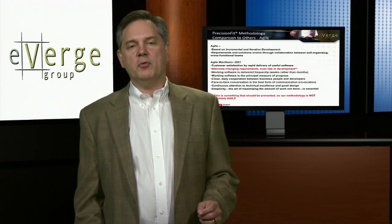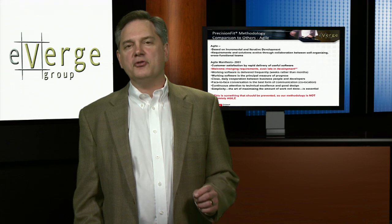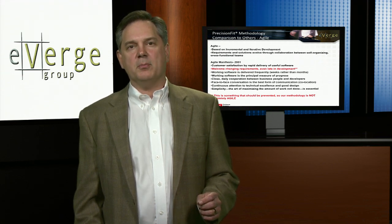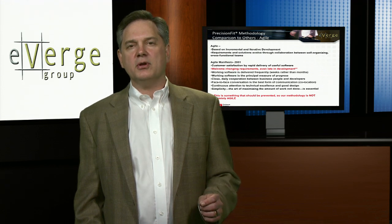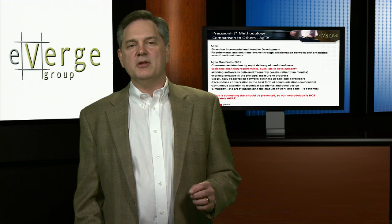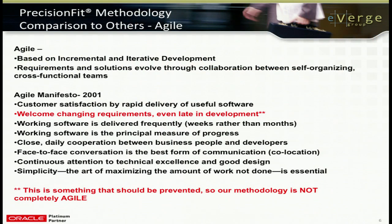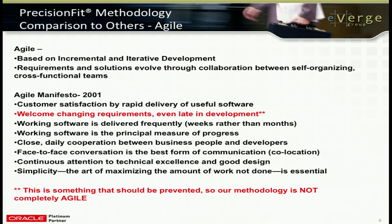On the other end of the spectrum is the Agile methodology. There are some really neat concepts in Agile that we've actually adopted in Precision Fit — it's an incremental and iterative concept where requirements and solutions are allowed to evolve through collaboration. However, the Agile manifesto, published in 2001, encourages changing requirements even late in development. As you'll see in your career at eVerge, we want to manage scope and encourage changing requirements to a point, but not late in development — that's going to be costly and cause budget and time overruns.